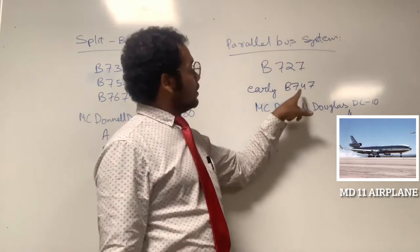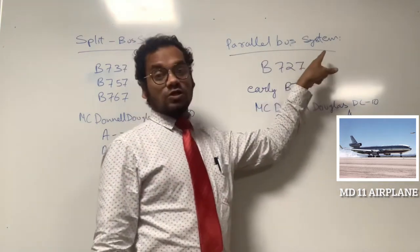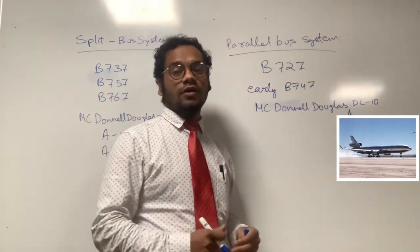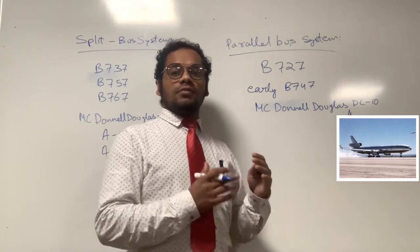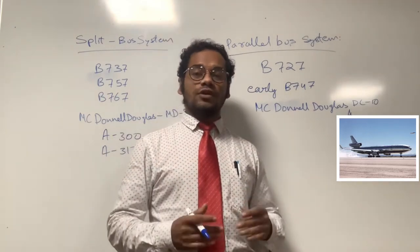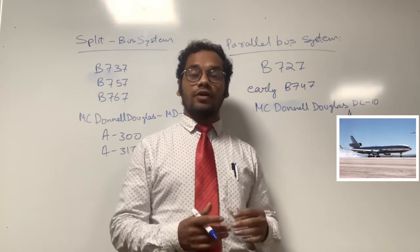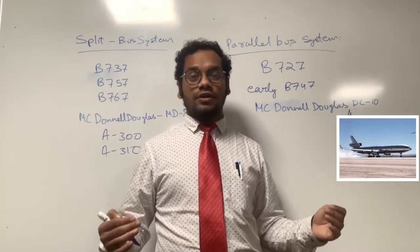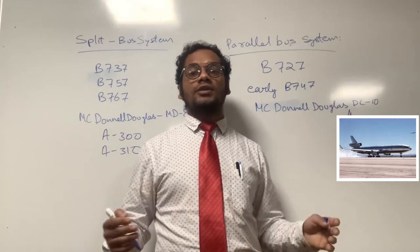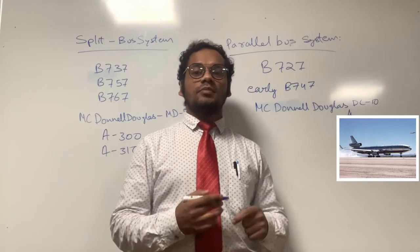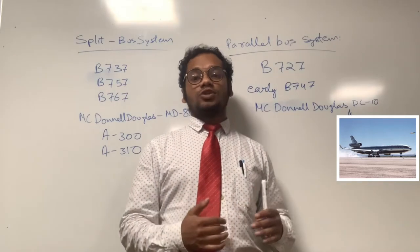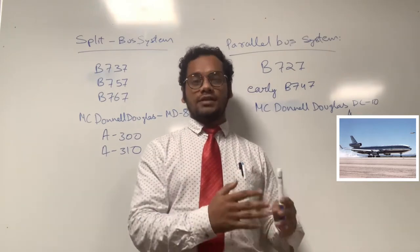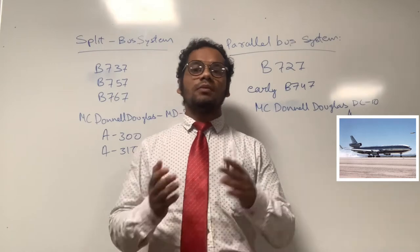One important point about the 747: in the early Boeing 747, the parallel bus bar system was used. But in some modern 747s, specifically the 747-400, a combination of parallel and split bus bar system is used. That means all four generators in the modern Boeing 747-400 are not connected in parallel. The left side generators and the right side generators can be connected together or isolated from one another by using a split bus bar breaker, called the split system breaker or SSB, which we will learn about later.